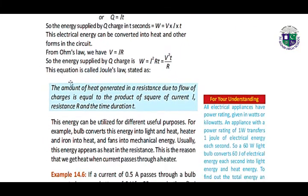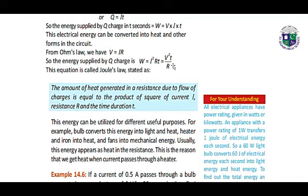The energy supplied by Q charge in T seconds is W equals V times I times T. This electrical energy can be converted into heat and other forms of energy. From Ohm's law, V equals IR, so the energy supplied is W equals I²RT equals V²T over R. This equation is called Joule's law.